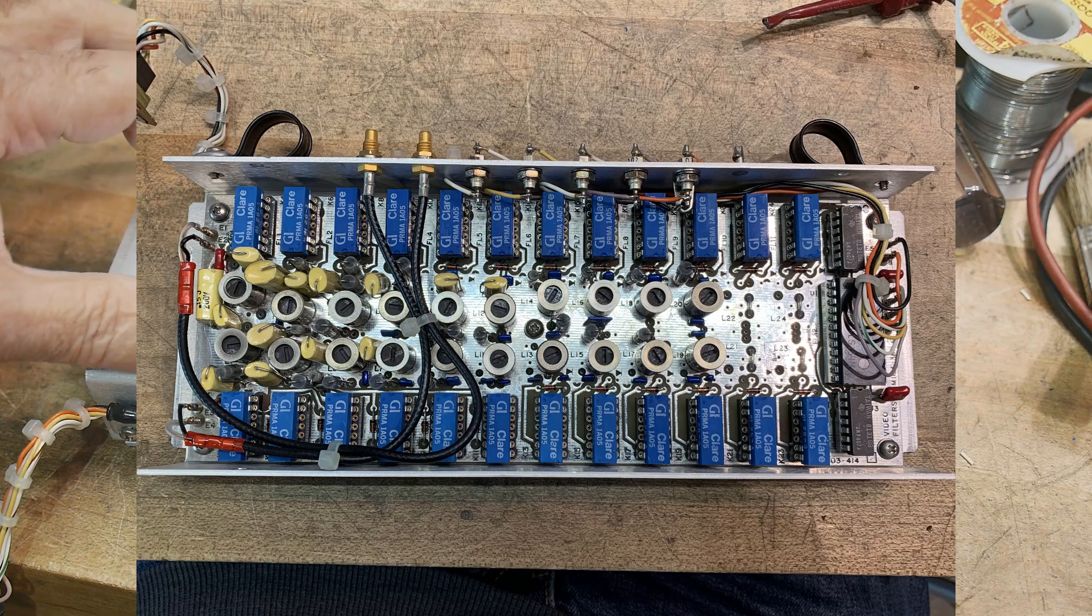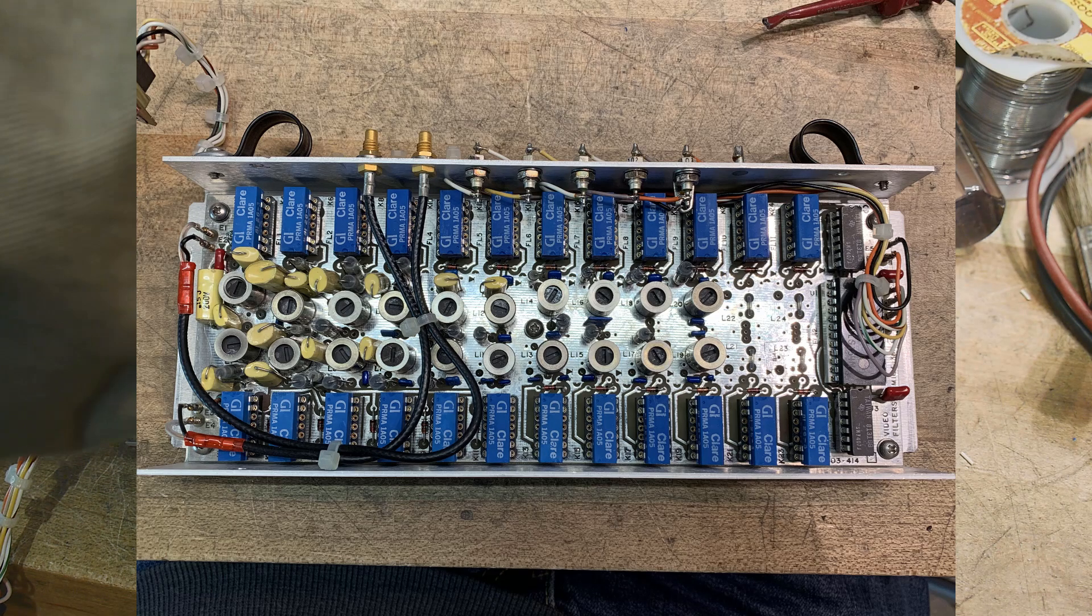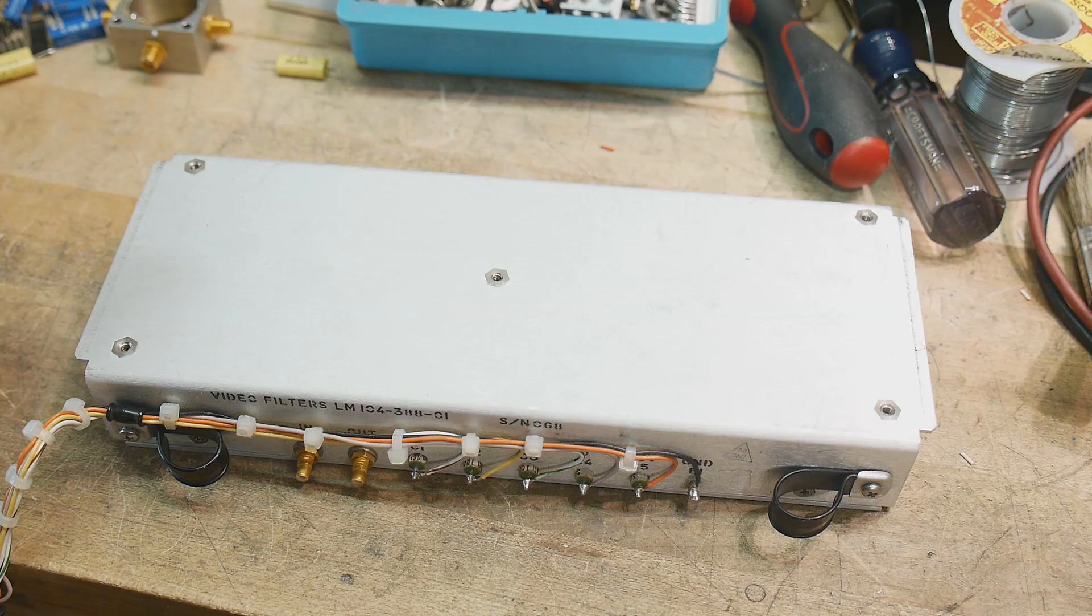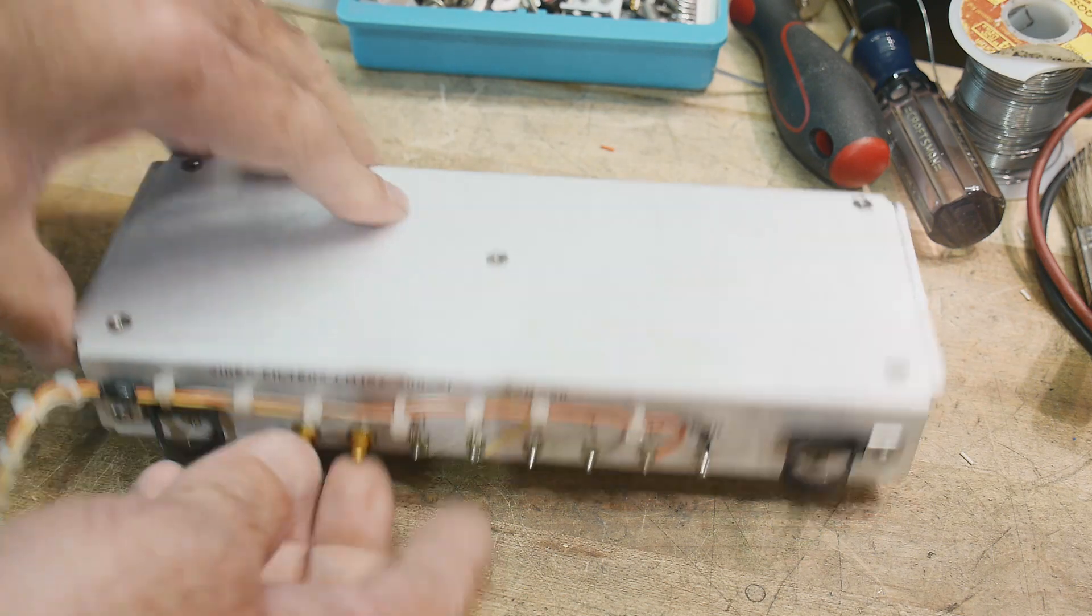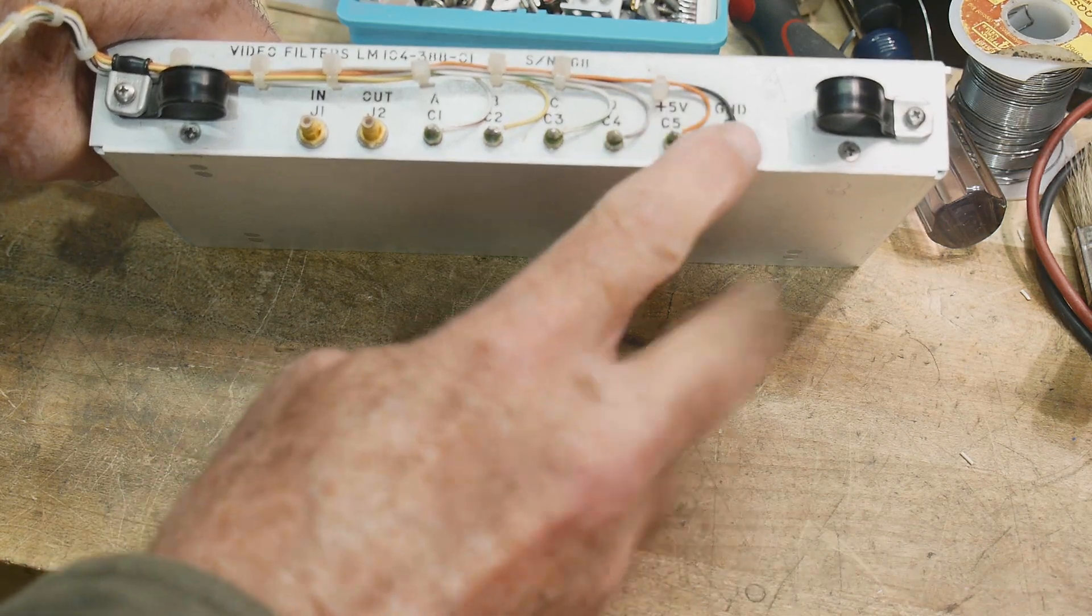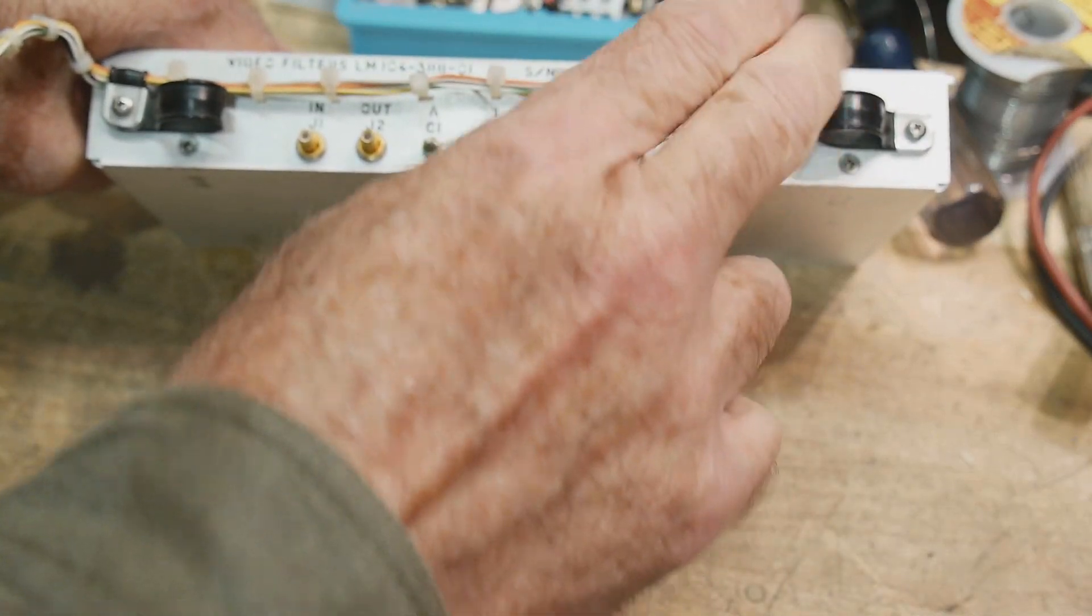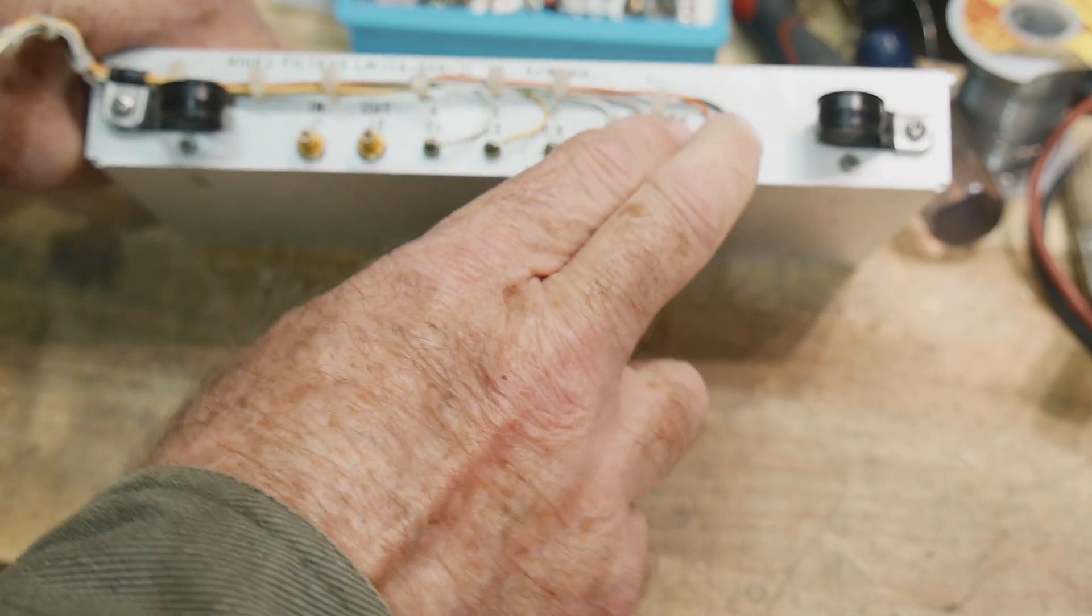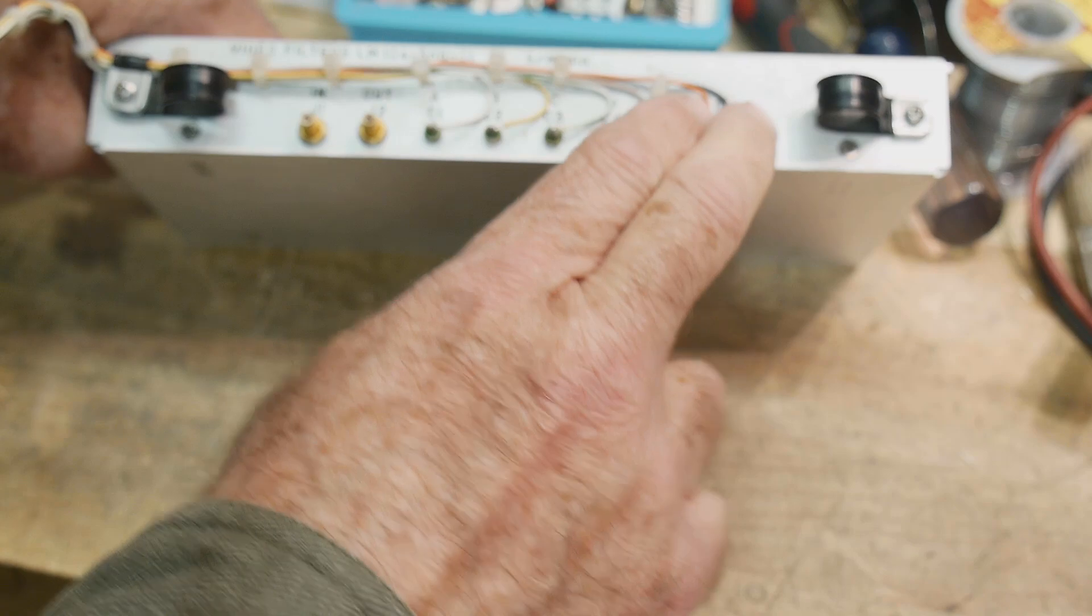It looks like a whole bunch of relays to select which filter you're looking at. It selects the in and the out for each filter bank. Now if we look at the front, the inputs here are plus 5 and ground to run the TTL section and also to run all the relays. They're running off of 5 volts.